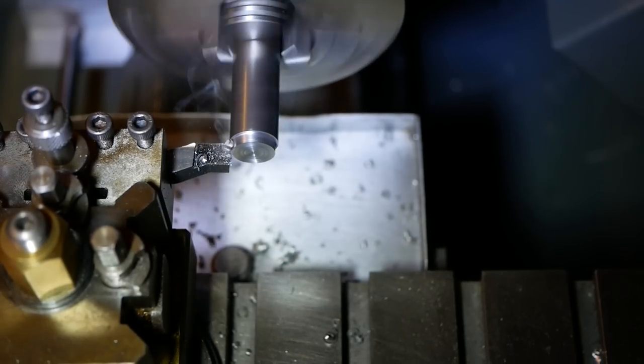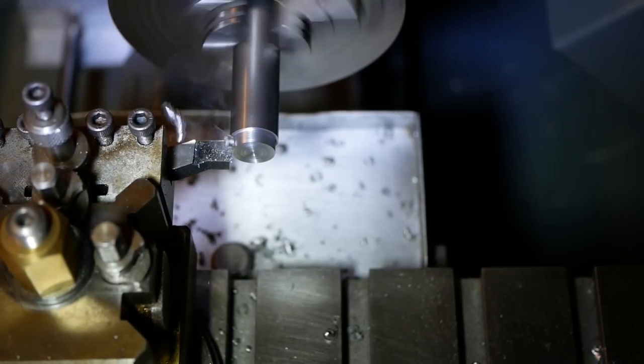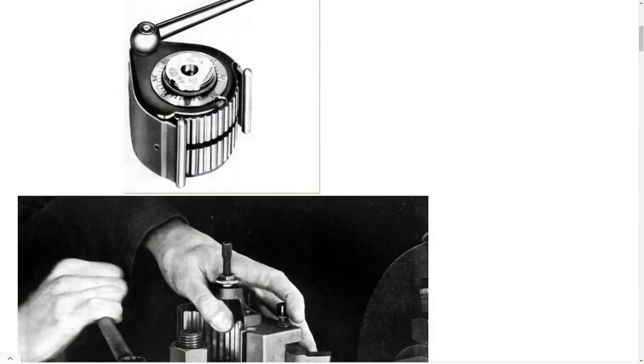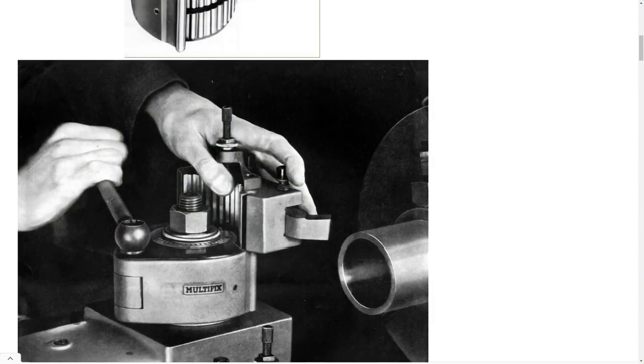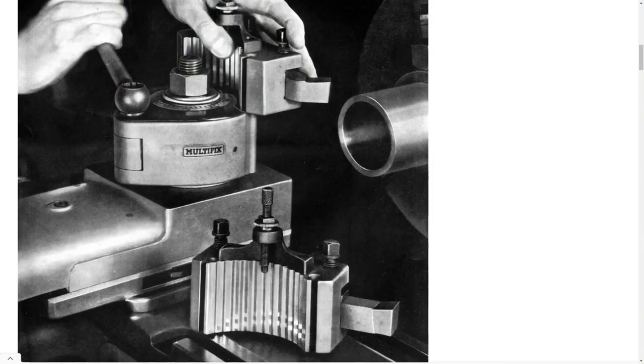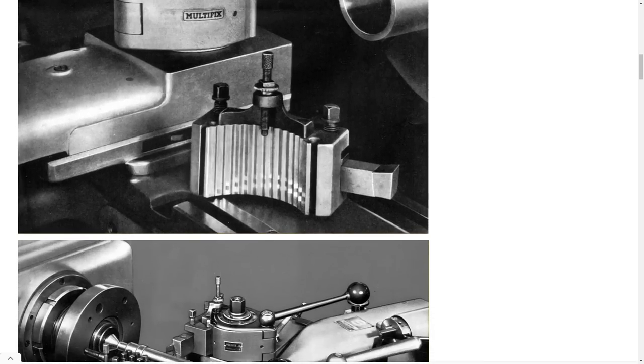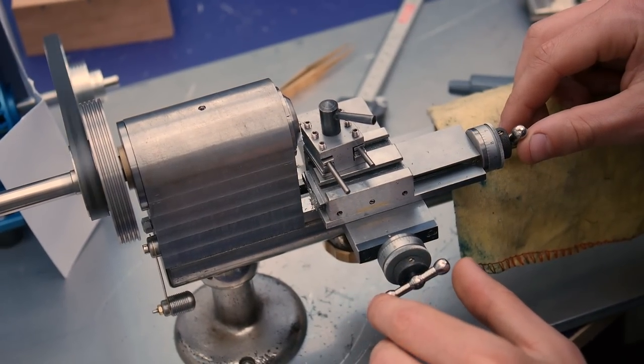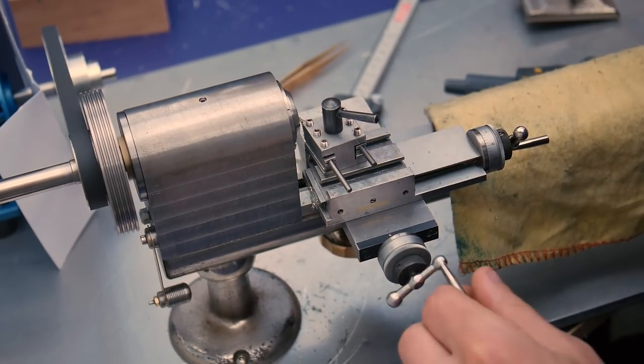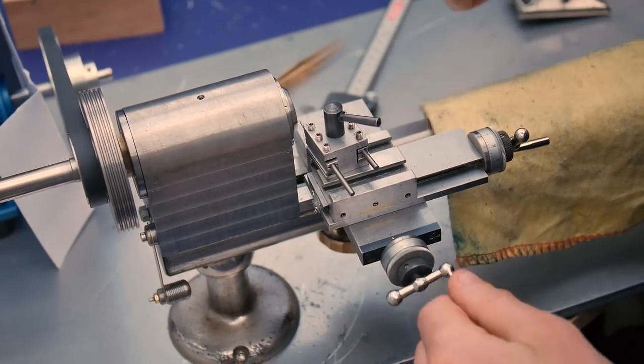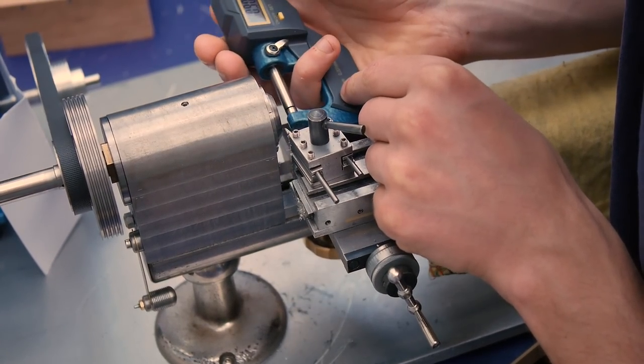Having said all this, the quick change tool post still has its place. High quality quick change tool posts, for instance the multi-fix tool posts, are also very accurate and very repeatable. In some circumstances, space may be limited, such as on a watchmaker's lathe. In this instance, perhaps a quick change tool post is the answer.